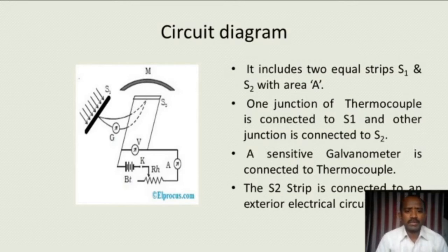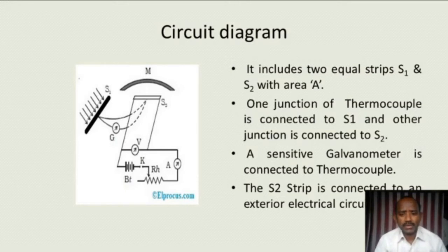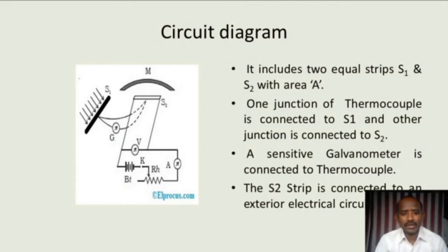The thermocouple is a device which has two terminals at different temperatures. Generally, one junction is in a hot condition and another junction is in a cold condition. Whenever there is a temperature difference between the two terminals and both are made of different materials or different conductors, a potential difference is developed between the two terminals. That is nothing but the Seebeck effect. This thermocouple works on the principle of the Seebeck effect.